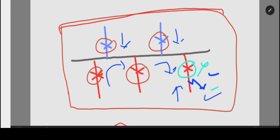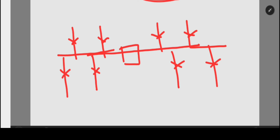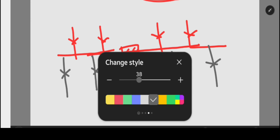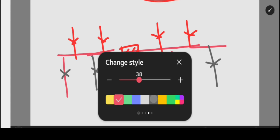Let us consider one more bus system to clear all doubts. This is a two-zone system with a bus section. There are four incomer lines with breakers, four outgoing lines, and a bus section breaker which divides the bus section into two zones.